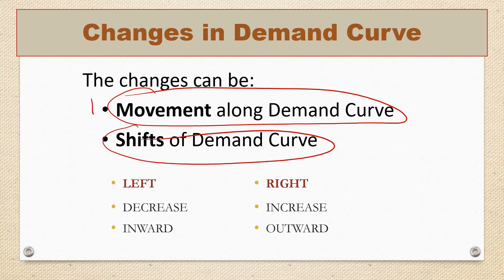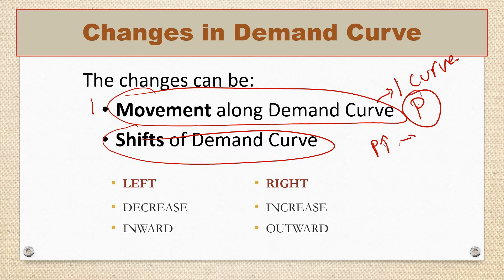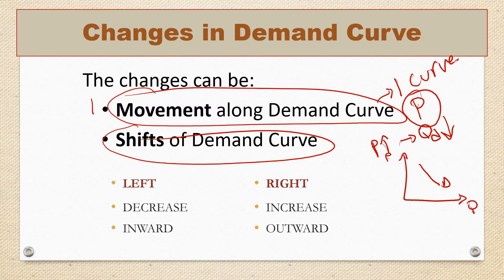Let me start with the first one. A movement along the demand curve means I am only talking about one curve, and here I am only talking about price as a factor — nothing else. Because prices are increasing, it affects my quantity demanded. Since the demand curve states the inverse relationship between price and quantity demanded, as prices increase, my quantity demanded decreases. Therefore I will show the movement along the demand curve only — any point on the curve itself — and as you can see, there is only one curve.